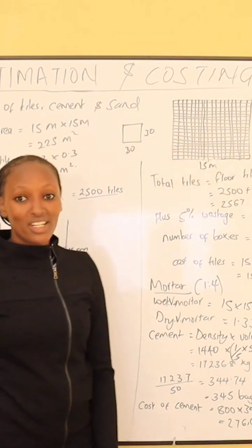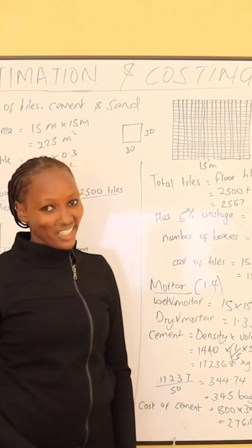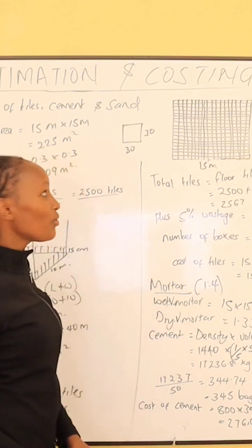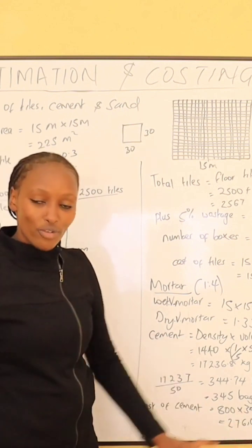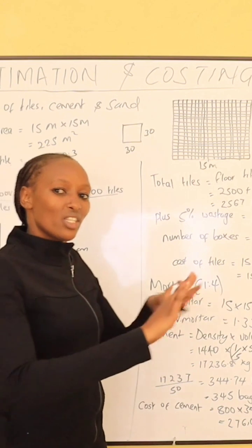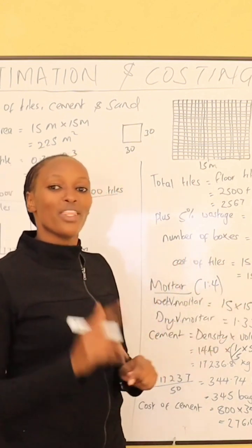To get the number of tiles that we require for the floor, we only need to take the total area of the floor divided by the area of one tile. The total area of the floor is 225 meters squared.